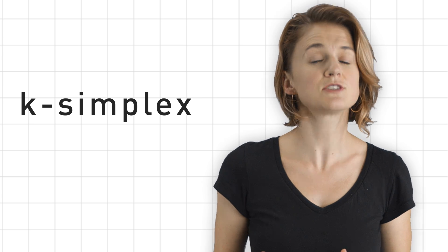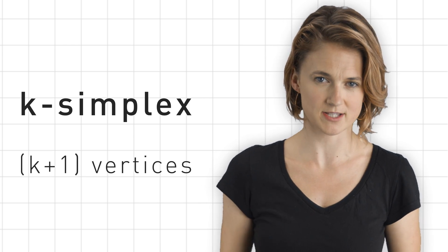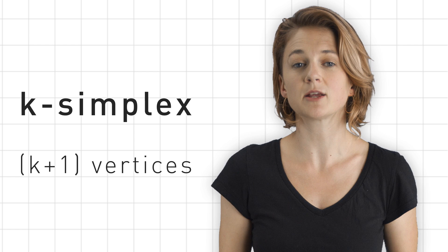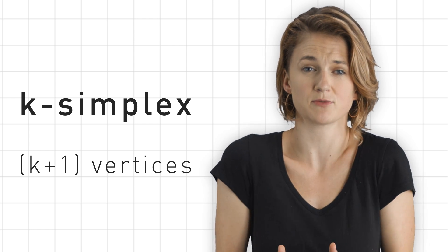Generalizing that pattern for any number k, a k simplex, which is k dimensional, is formed using k plus 1 vertices. The k simplex is made up of those vertices and all the space in between them,